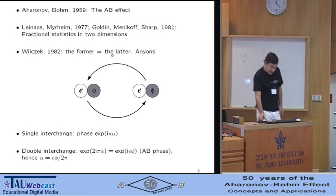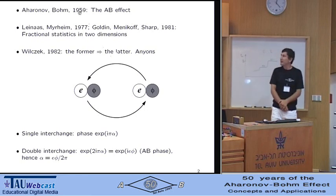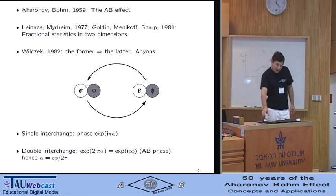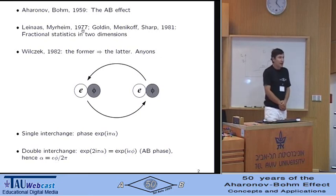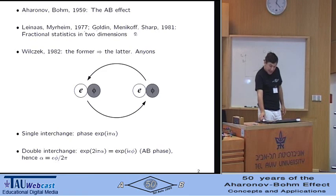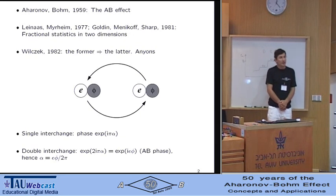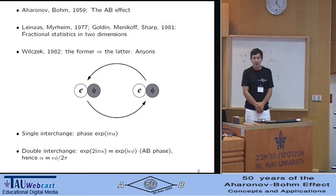Thus, in 1959, the effect was discovered. Then in 1977, Leynas and Mirheim, and in 1981, Golden and collaborators, using a different argument, proved that in two dimensions, particles can possess fractional statistics, that is, intermediate between bosonic and fermionic.